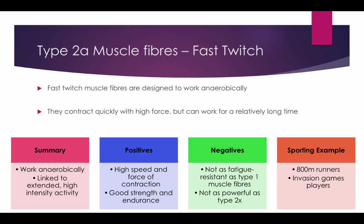Type 2A Muscle Fibres are designed to work anaerobically. They contract quickly with high force but can work for a relatively long time. They work without oxygen and are linked to extended high intensity activity. The positives are they have a high speed and force of contraction and good strength and endurance. The negatives are they are not as fatigue resistant as Type 1, so they tire quickly, and they are not as powerful as Type 2X. Sporting examples include 800m runners and invasion game players such as football, hockey, and netball.